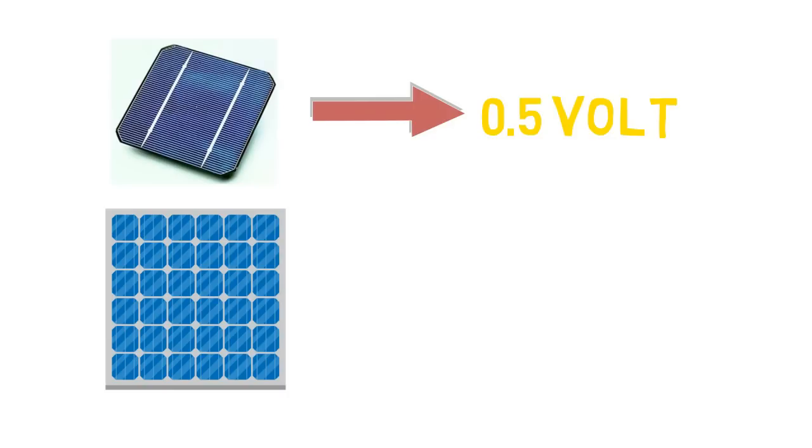Each silicon cell can give only half a volt of electricity, but you can put them together in panels to generate more electricity. Also, solar cells can last for years to come.